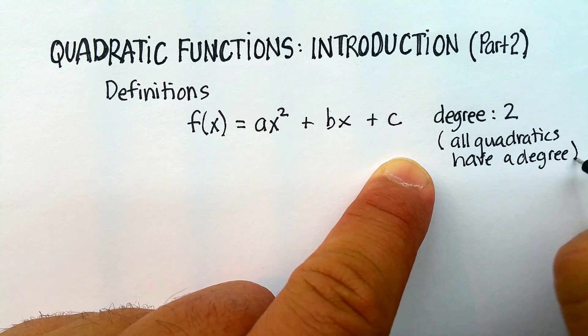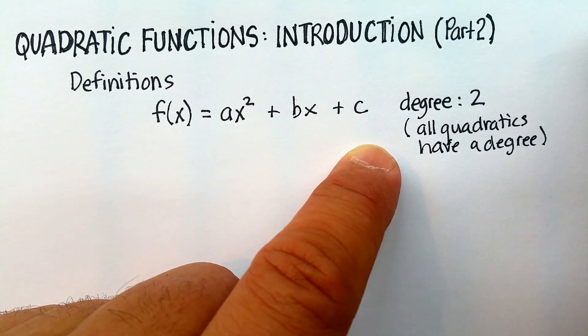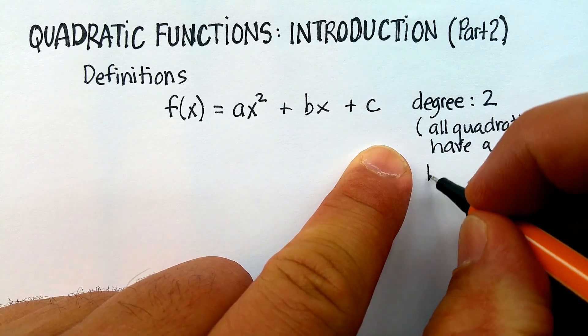And you might say, well, so what? Now that it has a degree of two, what does that mean? Well, a degree of two means that you have a parabola.